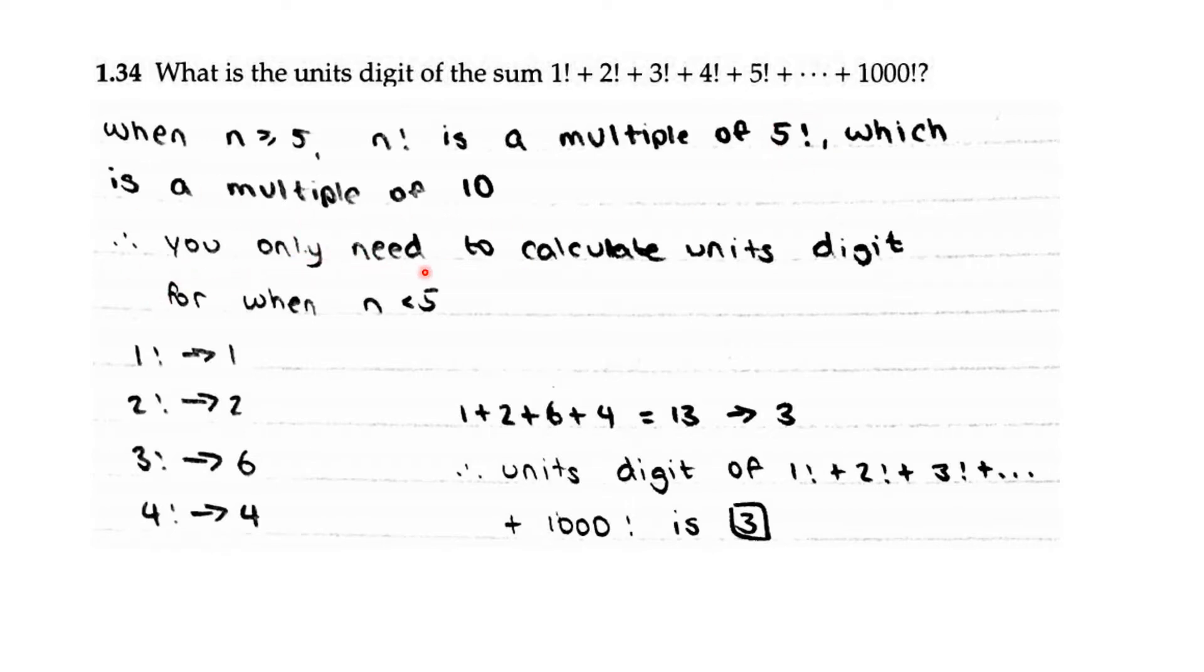That means you only need to calculate the units digit for when n is less than 5 to find the units digit of this sum. So 1 factorial's units digit is 1, 2 factorial's units digit is 2, 3 factorial's units digit is 6, and 4 factorial's units digit is 4.